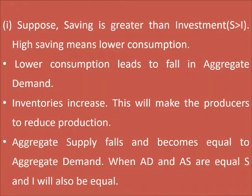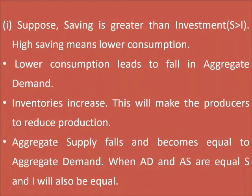What happens if Saving is greater than Investment? High saving means lower consumption. Lower consumption leads to a fall in Aggregate Demand, causing inventories to increase. This will make producers reduce production, so Aggregate Supply falls and becomes equal to Aggregate Demand. When Aggregate Demand and Aggregate Supply are equal, then S and I will also be equal.